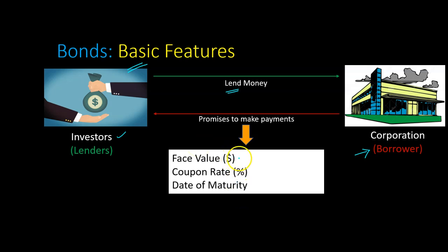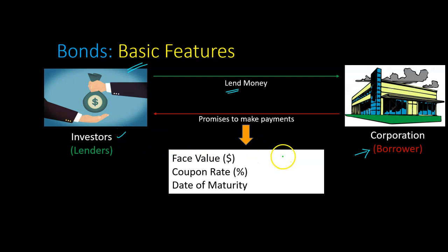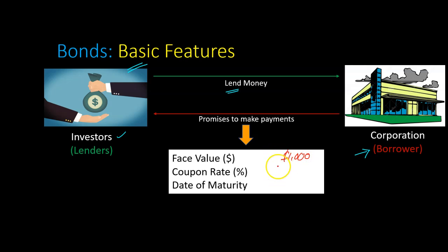The bond specifically spells out what exactly are the payments that the investors or the lenders are going to receive. There are three main things that help the lenders understand what exactly is the amount of payments they are going to receive and when. The first thing is what is referred to as the face value of the bond, and this for most corporations, especially in the U.S., is equal to $1,000. I will explain in a bit the role that this face value plays in determining the magnitude and the timing of the cash flows that these investors or lenders receive.